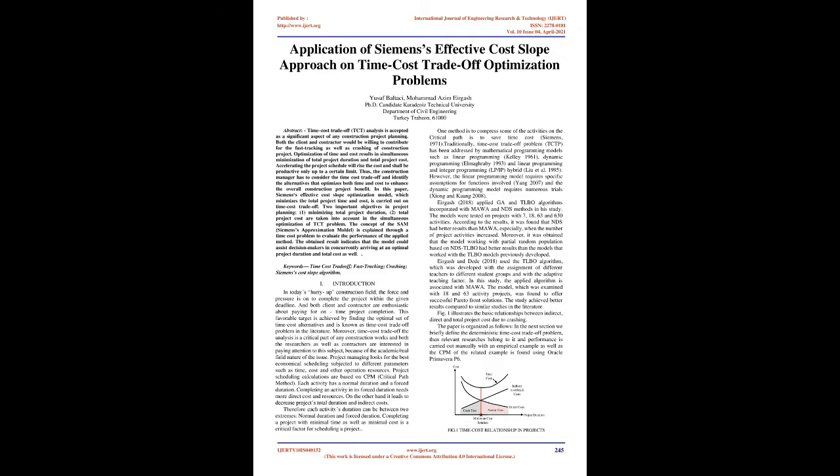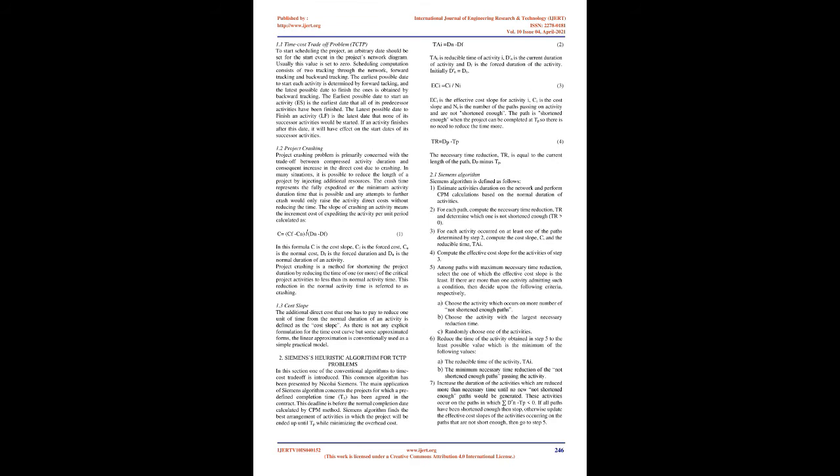Traditionally, the time-cost trade-off problem (TCTP) has been addressed by mathematical programming models such as linear programming (Kelly, 1961), dynamic programming (McCraby, 1993), and linear programming and integer programming (LP-IP) hybrid (Lu et al., 1995). However, the linear programming model requires specific assumptions and functions (Yang, 2007), and the dynamic programming model requires numerous trials (Xiong and Kuang, 2008).